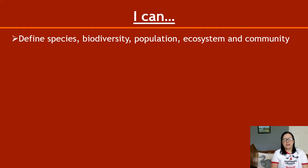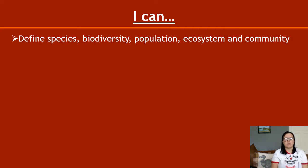The things we're defining are: species, biodiversity, population, ecosystem and community. You need to be able to define these words as well as identify them from their definition, so it's essentially quite a lot of flashcard skills. Common exam questions that come up about this tend to be one-word answers or multiple choice questions where you're trying to find the right definition or the right word that matches the definition in the question.